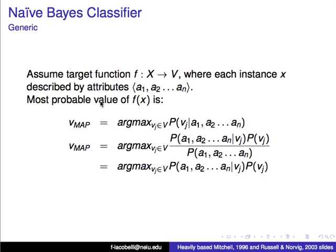The most probable value of this function, given an example, is the argmax of the probability of seeing a value v_j given all the attributes. For example, the probability of whether a person has the flu or not is the maximum between the probability of having the flu given all the symptoms, and the probability of not having the flu given the same symptoms. Whichever is higher, that's the most probable value of f(x).